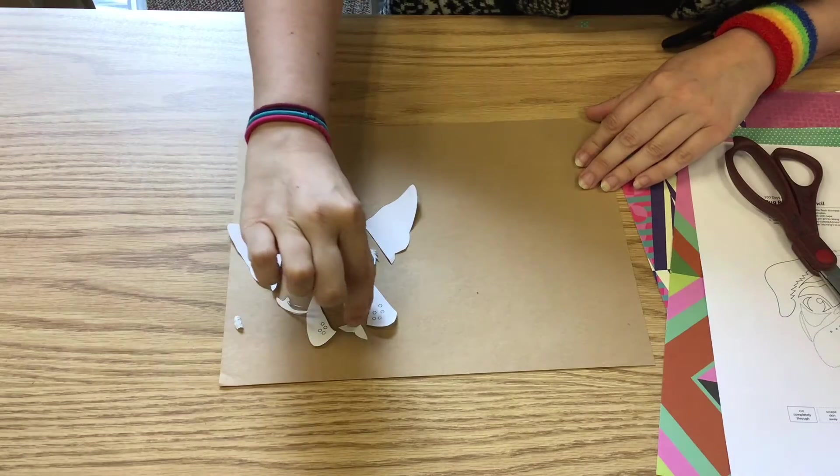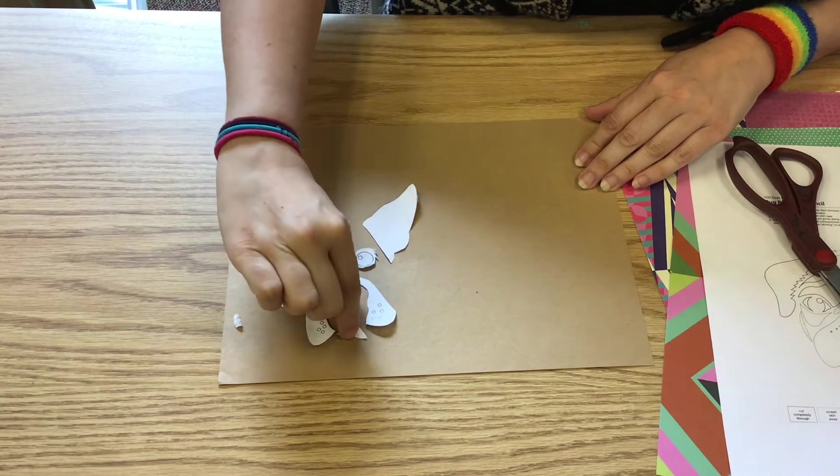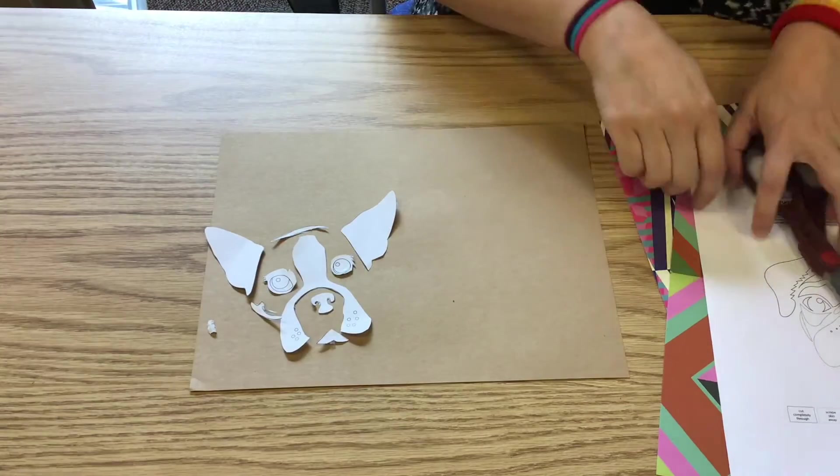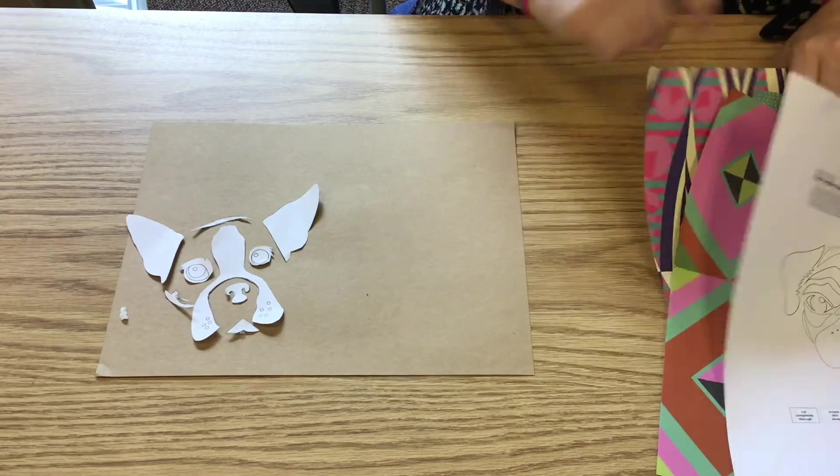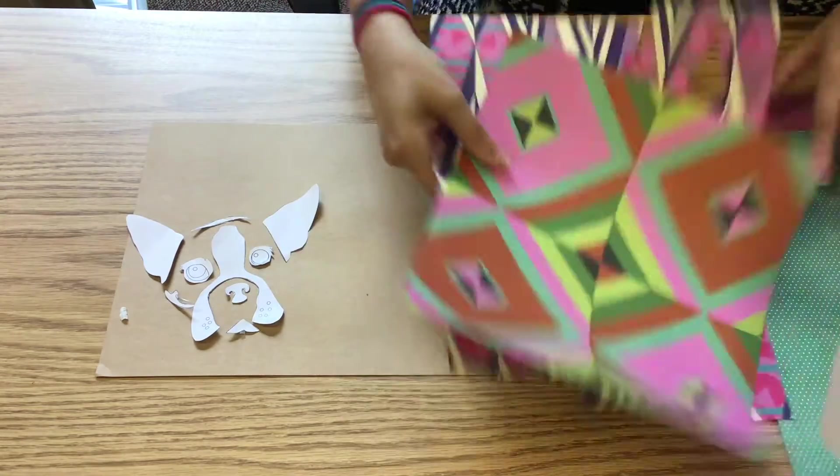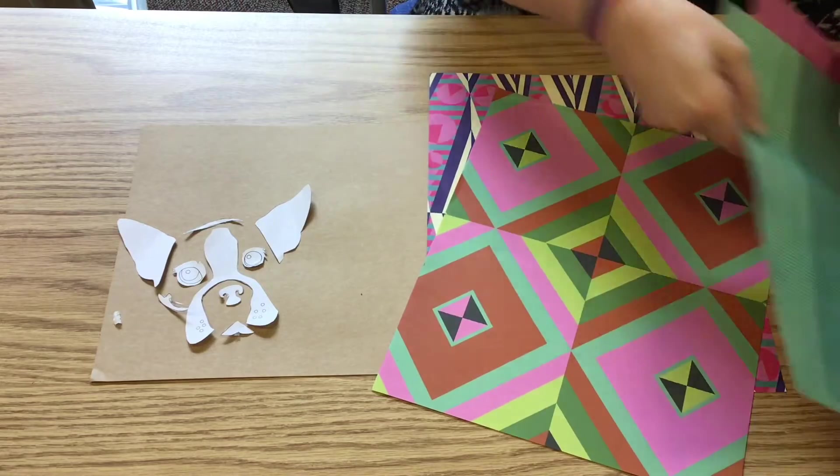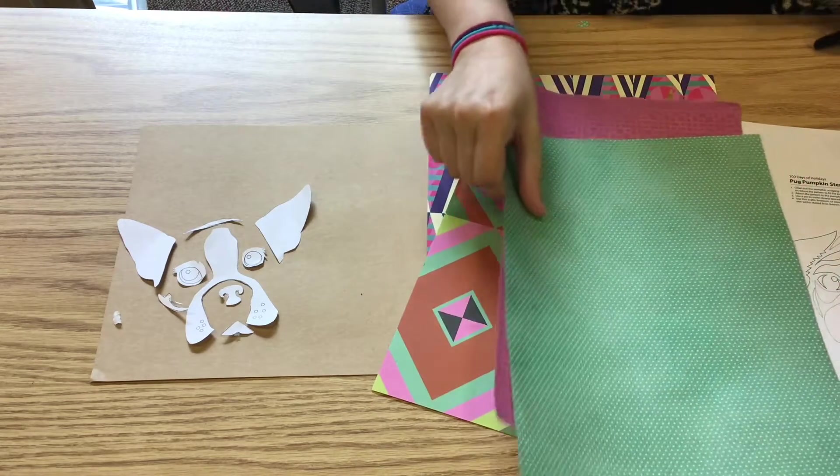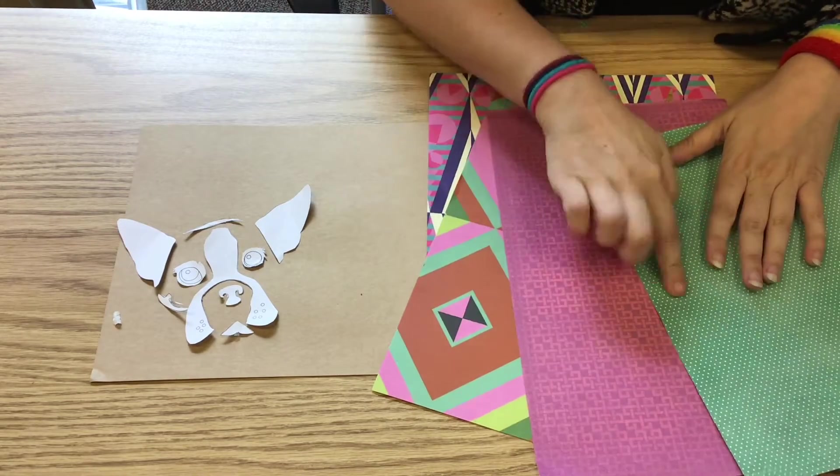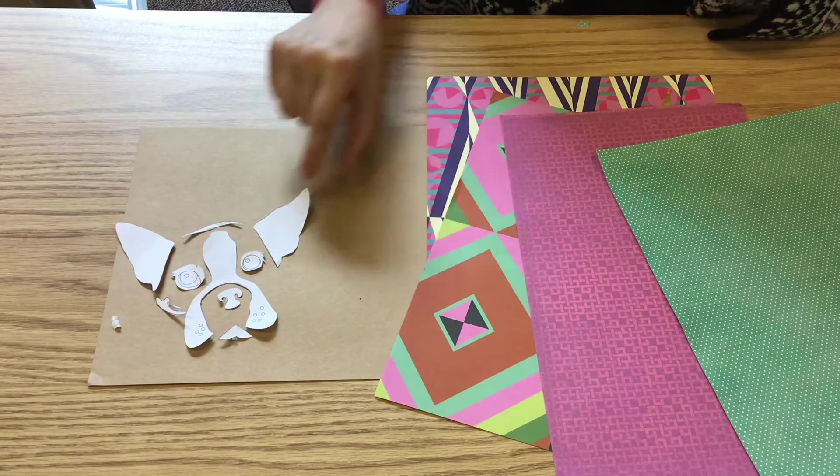And once you've figured out how you like it, you're gonna go through your colored paper. You're gonna get an assortment and start figuring out how you'd like the finished product to look. You're gonna get stuff with small patterns and stuff with big patterns.